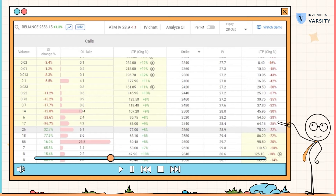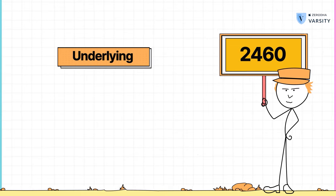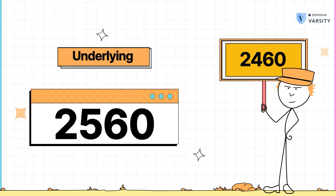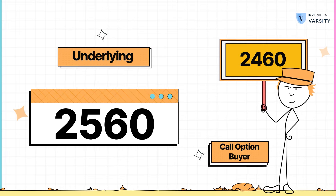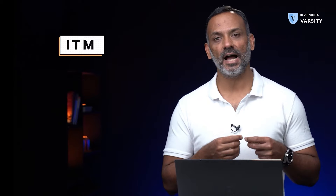Let's look at another option — let's take 2460 for instance. The question is the same: if the expiry were to happen right now, would this option end up in a favorable situation to the option buyer? Of course it would, because the strike is 2460 whereas the underlying is trading 100 points higher, which is 2560. Hence, the call option buyer here would definitely want to exercise the right to buy the stock. Such options where the call option buyer has an incentive to exercise his or her right are called in the money options, or simply the ITM option.